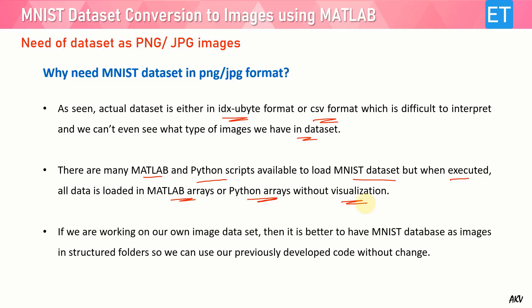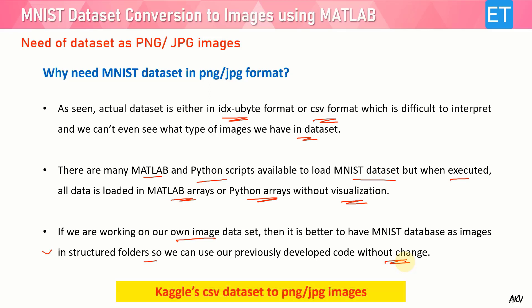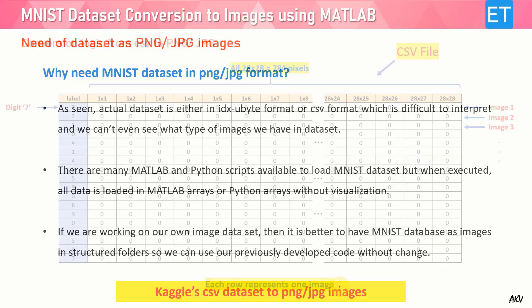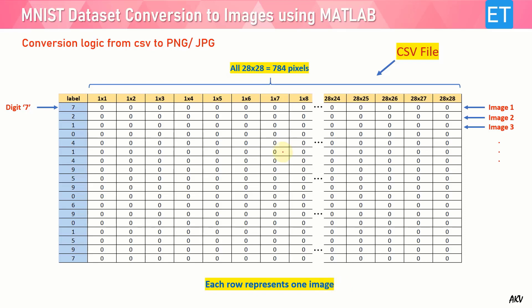Although you can take a few sample images from the loaded array by writing code, you still don't have any visualization of the whole dataset. The important thing is that if we are working on our own image dataset, it is better to have the MNIST database as images in a structured folder so we can use our previously developed code on it without too much change. In this video I will explain the Kaggle CSV dataset to PNG and JPEG images. I'm not taking IDX ubyte because in newer versions of MATLAB there is already a function that reads IDX ubyte format.